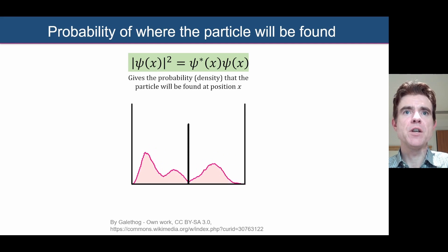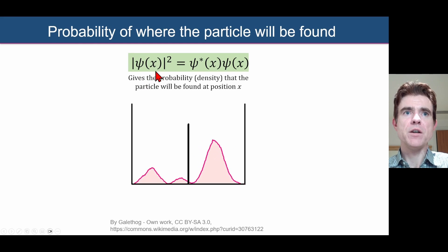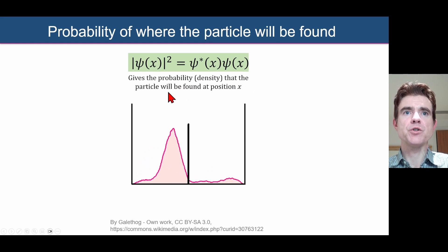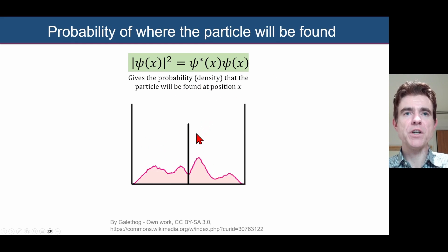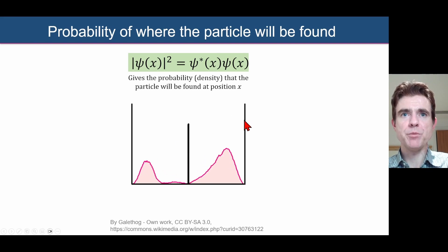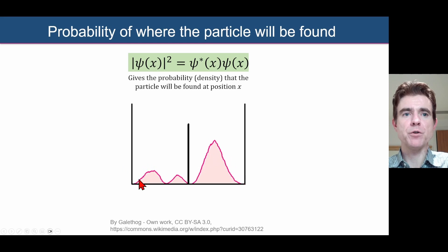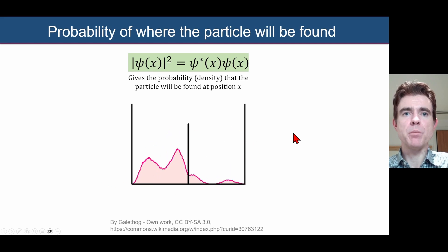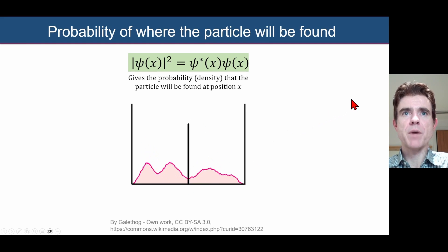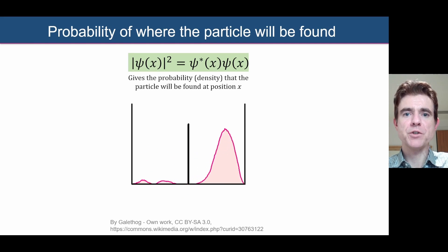To finish, the wave function is an amplitude, and the square of that — ψ*ψ — gives us the probability density function: the probability of finding the electron, or in general a particle, at any particular position x. Here we see a time-varying wave function with position x along the axis, showing the time-varying probability of finding the particle either side of a particular barrier.